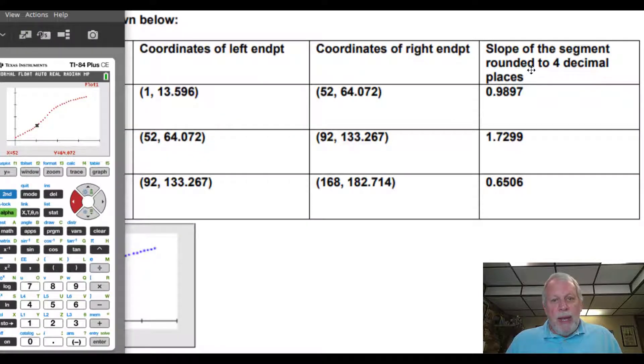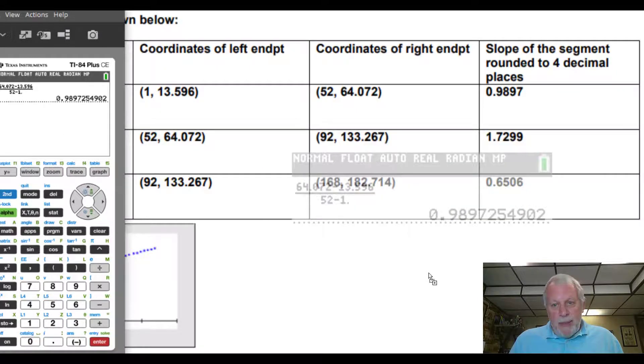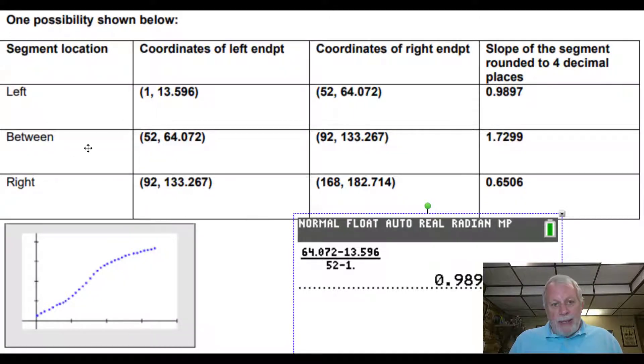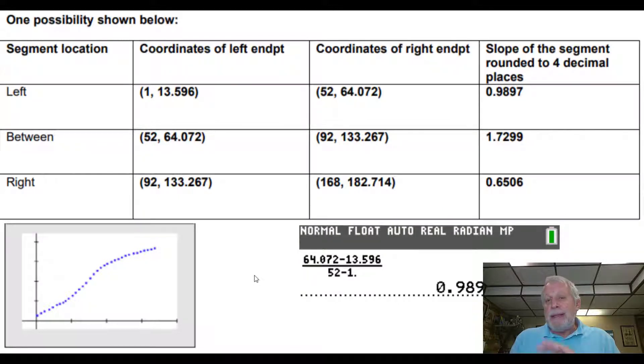And then what I would want students to do is to be able to calculate the slope of each segment, because that slope means something as far as this data goes. So let me show you what I mean here. I'm going to get myself a fraction template. I'll subtract the y's 64.072 minus 13.596, all over 52 minus 1, which I could do mentally also. I'm going to put a decimal point in this so I get a decimal in my answer. There's my answer. As you can see, I'm rounding it to the nearest four decimal places, 0.9897. I did a similar thing for the slopes of the line between these two points and the slopes for these two points. Again, press pause any time as needed.